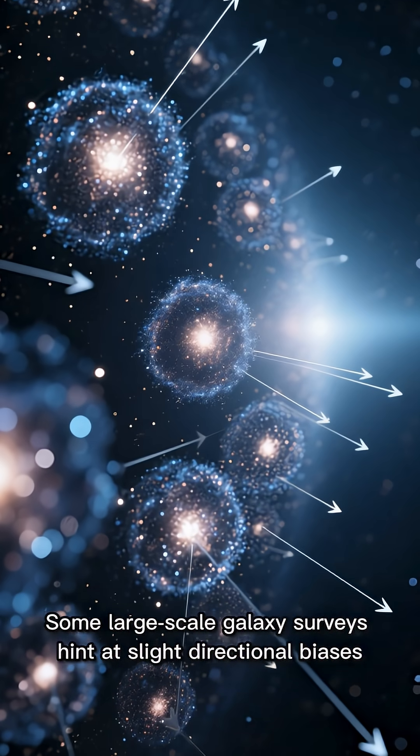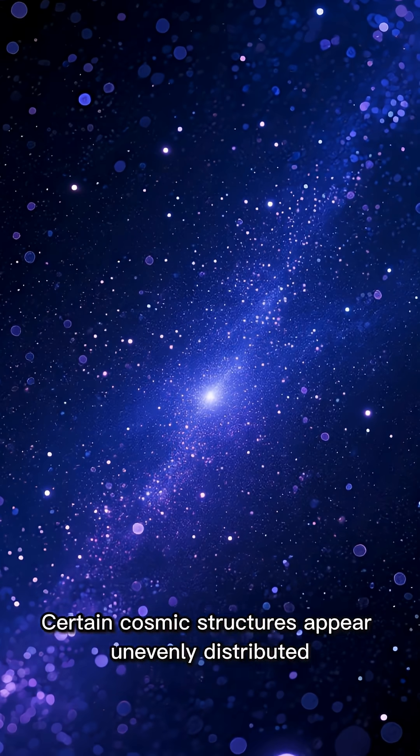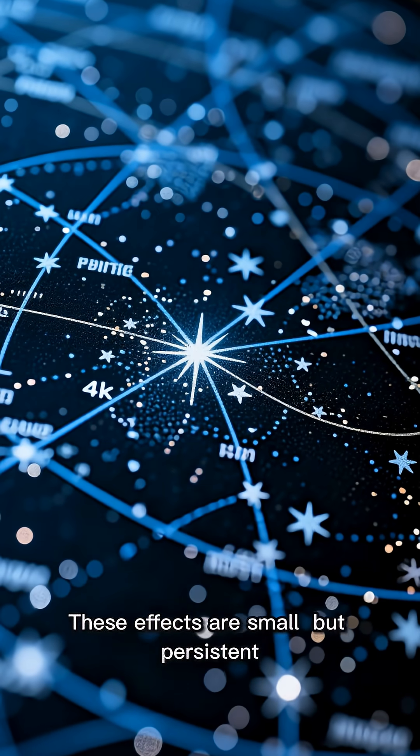Some large-scale galaxy surveys hint at slight directional biases. Certain cosmic structures appear unevenly distributed. These effects are small, but persistent.